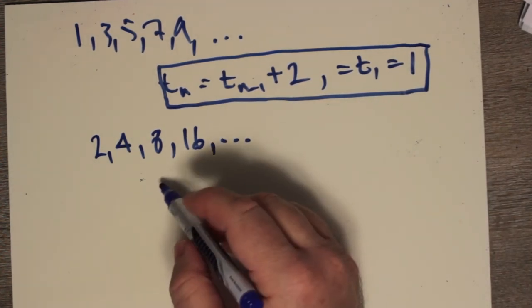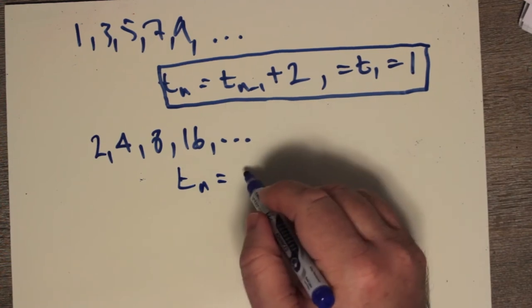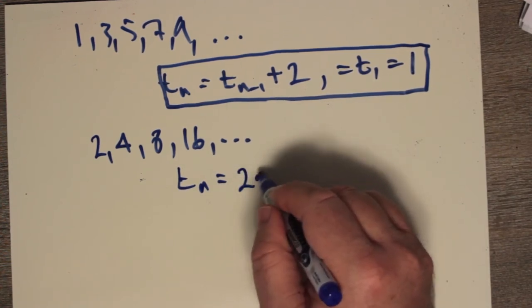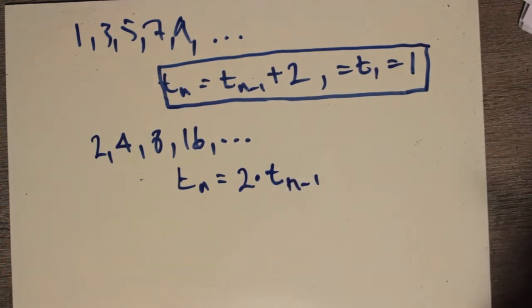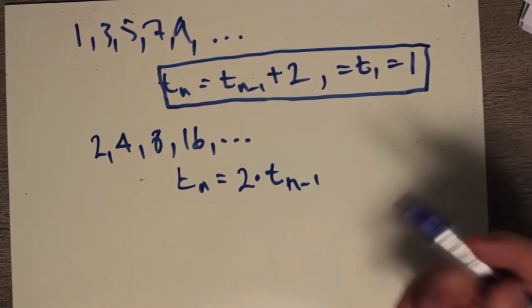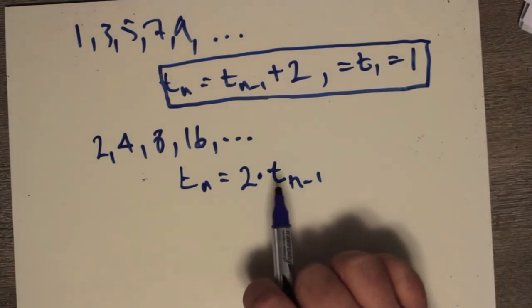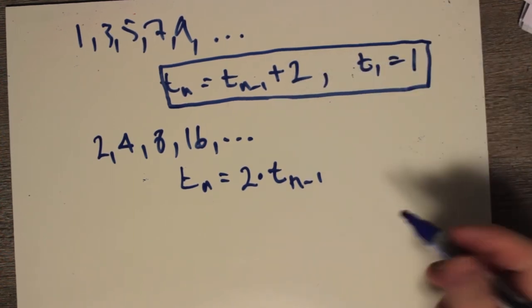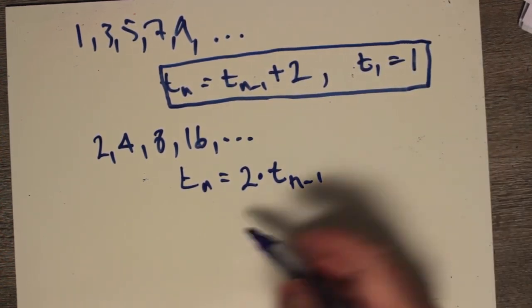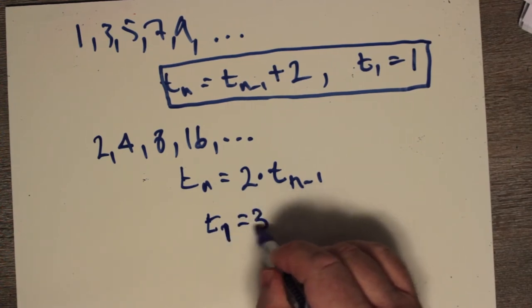Well, how about if we say now that the nth term is equal to 2 multiplied by the previous term, which would make sense? Which would seem fine. But except I don't tell you what the first term is. Let's say the first term was 3. Let's say that t1 was equal to 3.